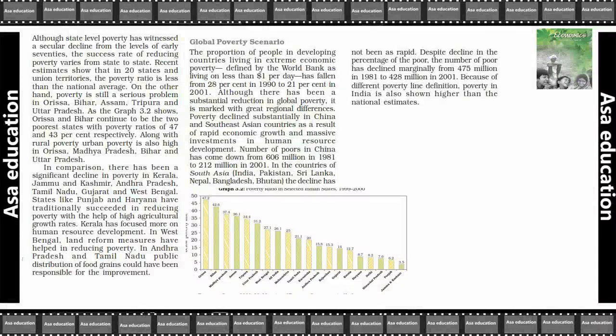Although state-level poverty has witnessed a secular decline from the levels of the early 70s, the success rate of reducing poverty varies from state to state. Recent estimates show that in 20 states and union territories, the poverty ratio is less than the national average.